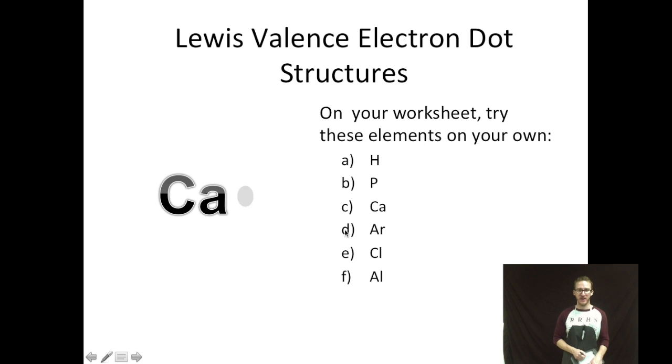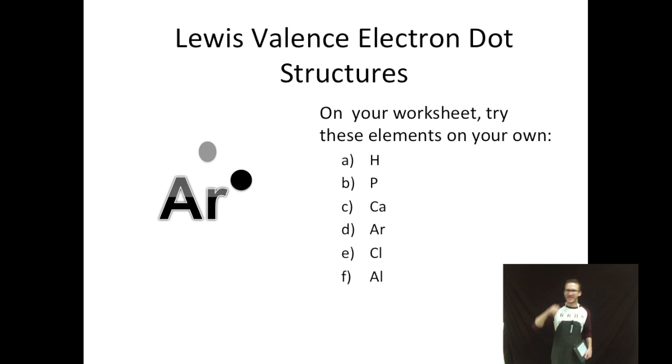Calcium only has two valence electrons. Two dots, 90 degrees. Argon, noble gas, group eight. Count them. Can we get to eight? There we go.